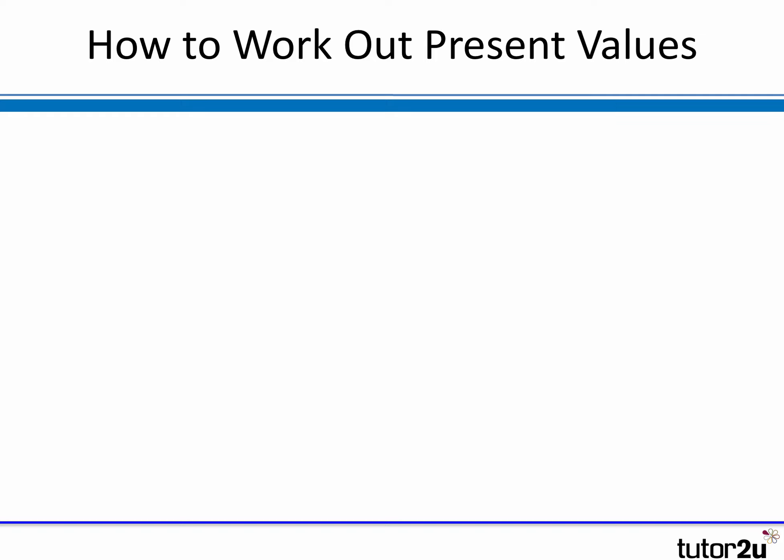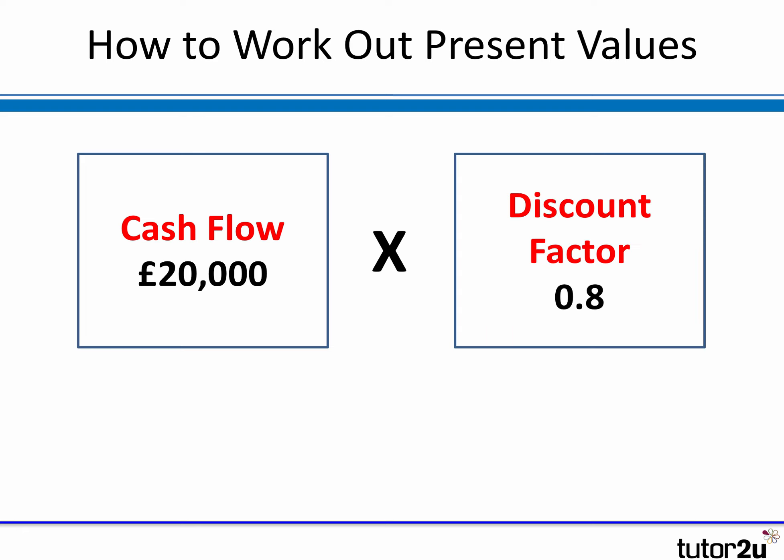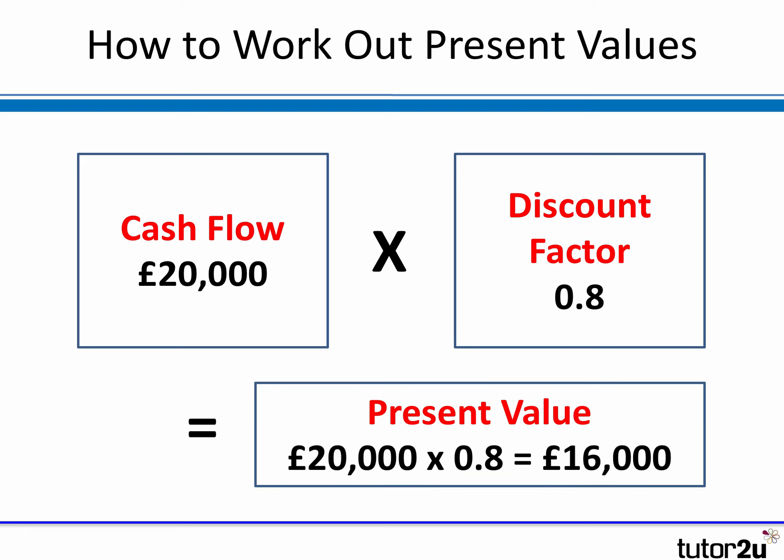So how do we work them out? We take the cash flow — for example, 20,000 — and multiply it by the discount factor — for example, 0.8 — and that calculates the present value. If you want to have a quick go at some calculations, pause the video now and calculate in your head or on paper, then start the video again to see the answer. The answer is 16,000: 20,000 times the discount factor of 0.8 — a simple multiplication.